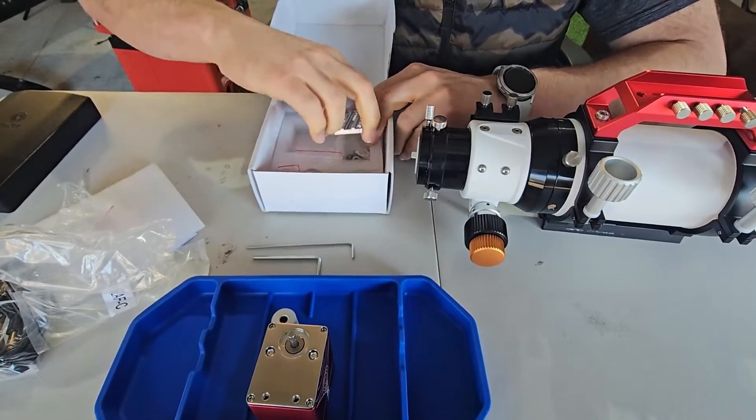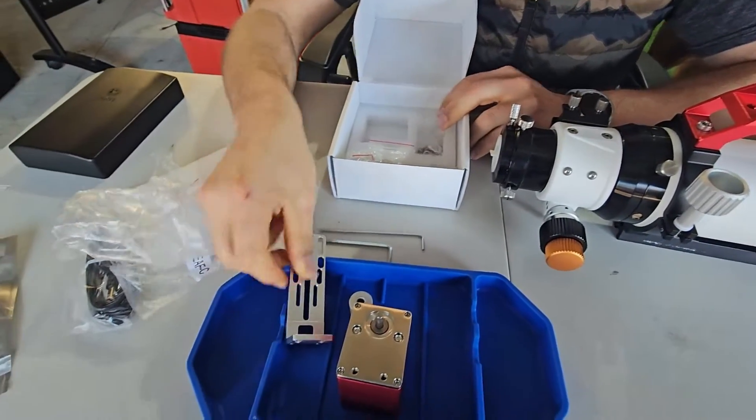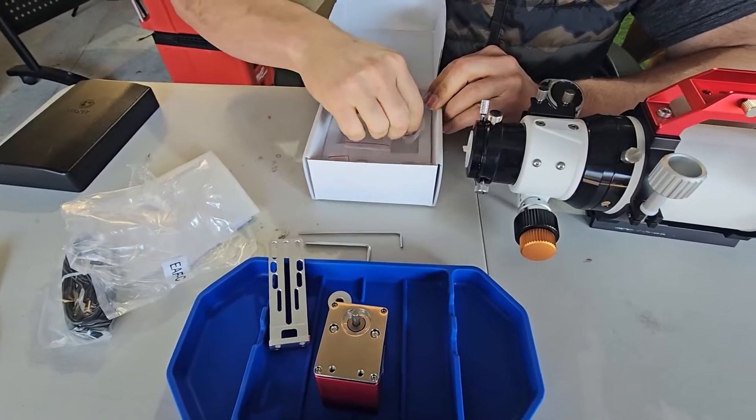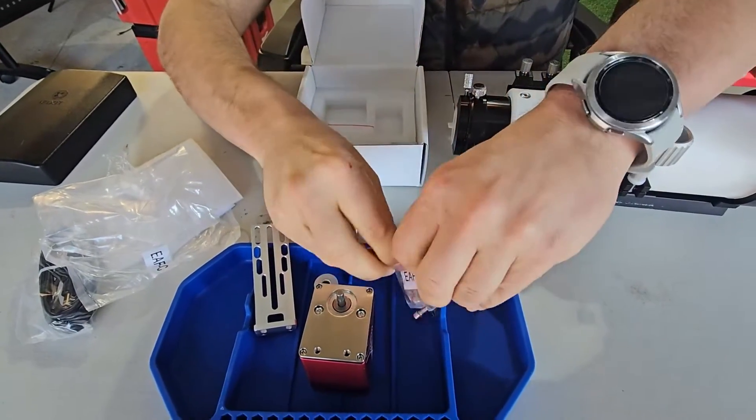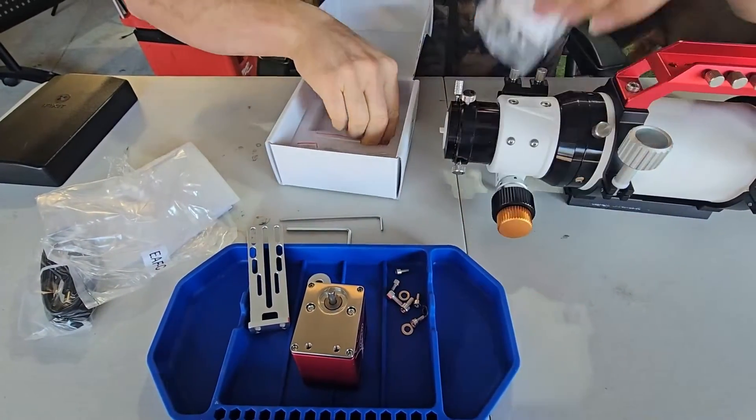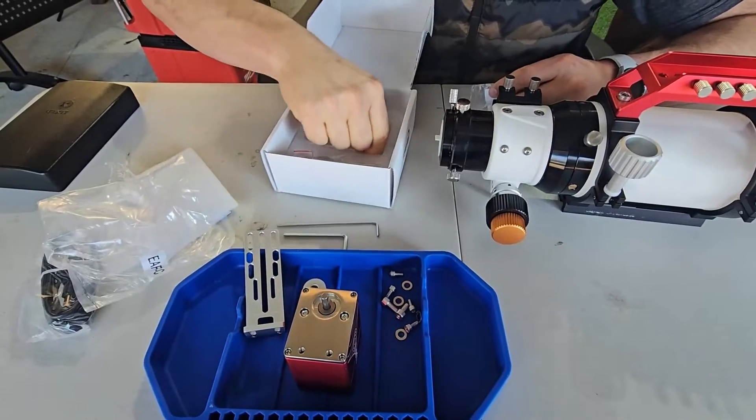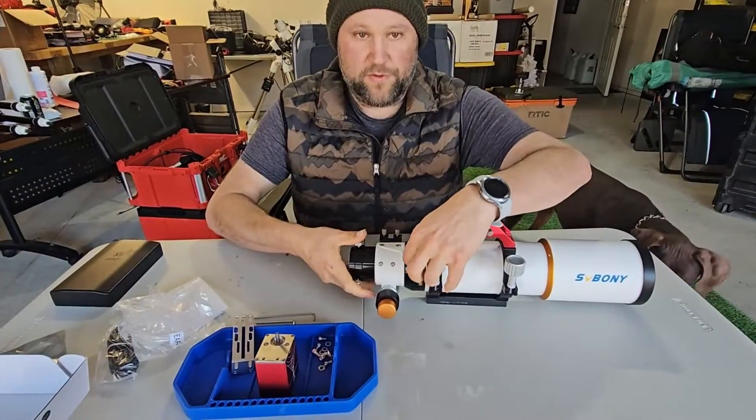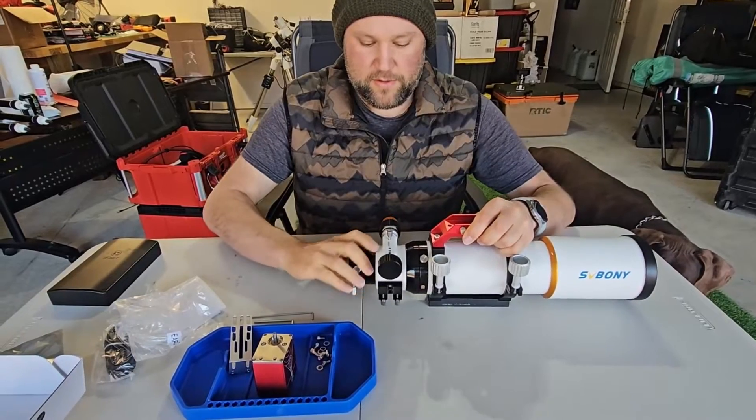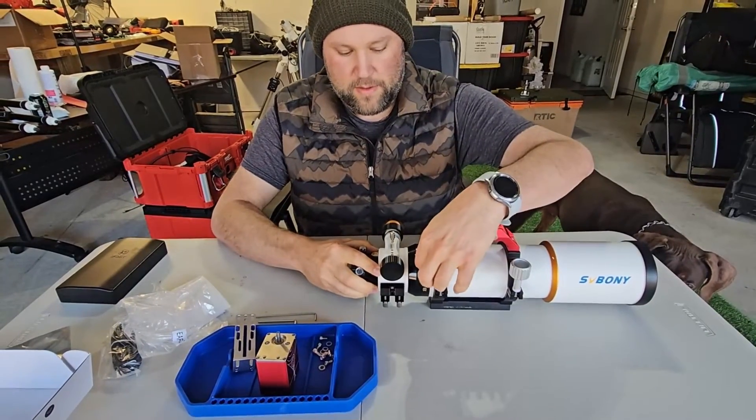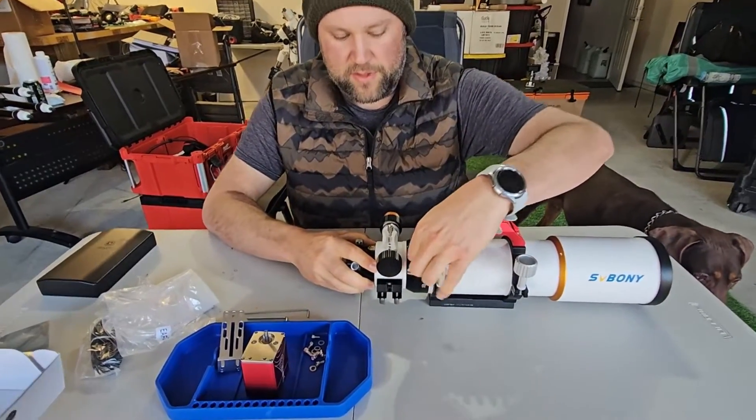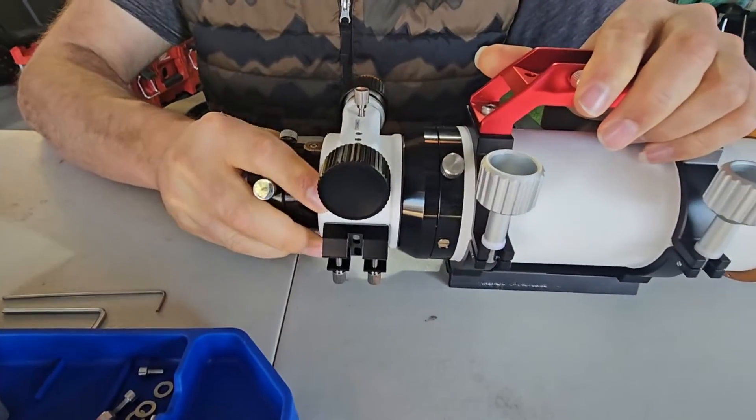We have our physical mount and then all of our hardware and washers. First thing I'm going to do is rotate the focuser assembly around so it's facing up and just lock it down so it kind of holds it in place for us.